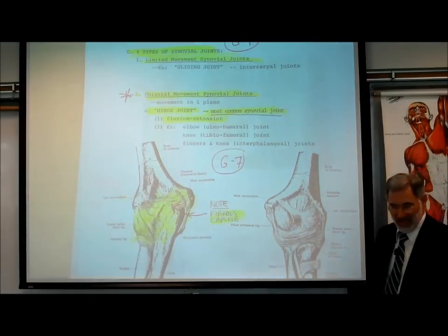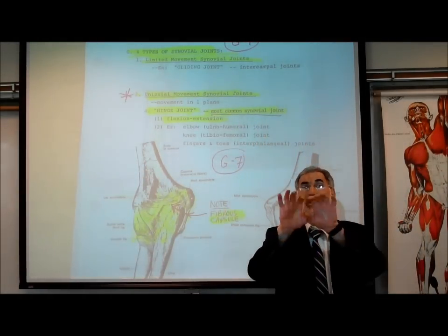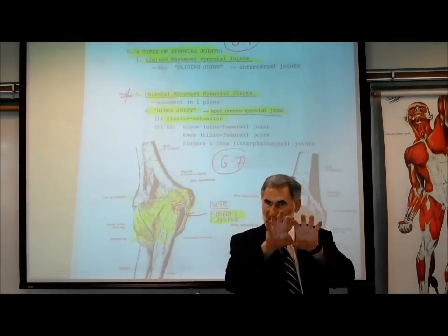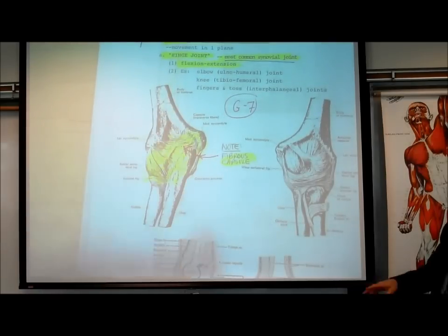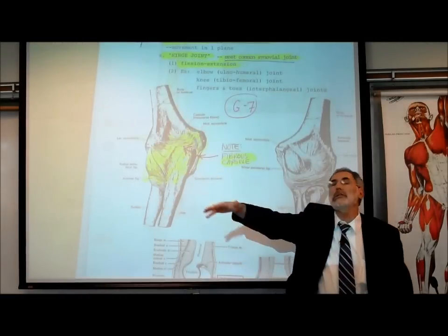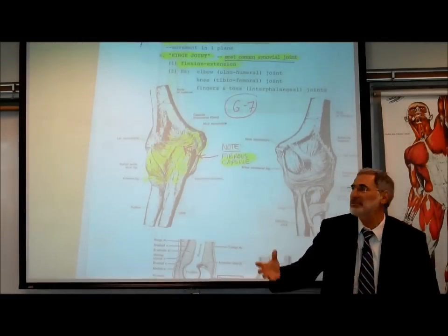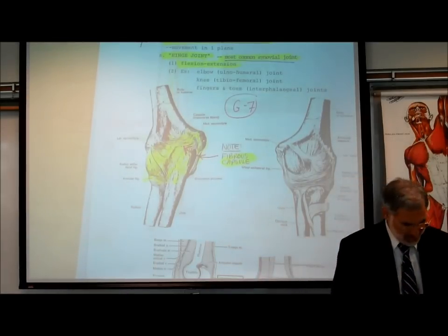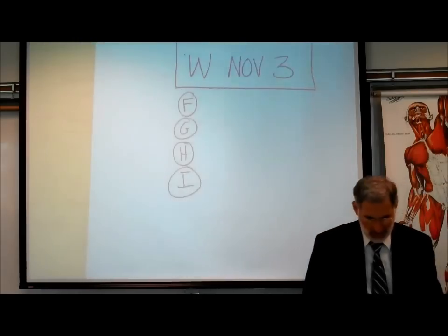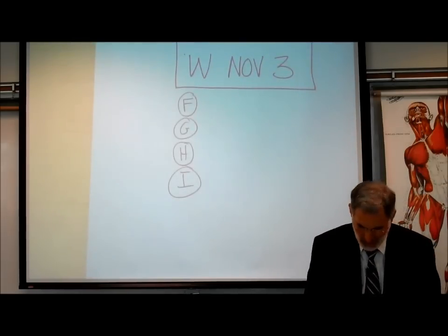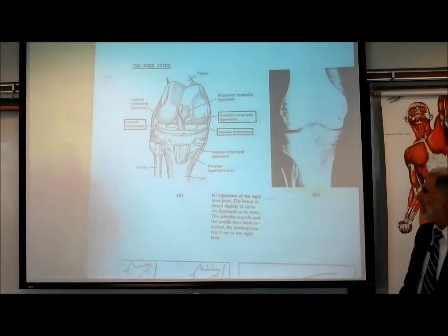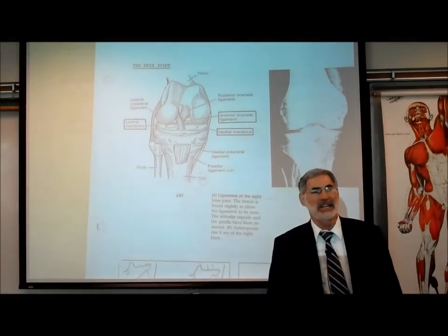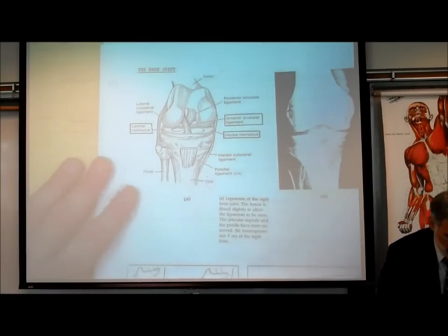Hinge joints include not only the elbow and the knee, but also the joints between your phalanges — both fingers and toes — and they allow flexion and extension. This picture shows the elbow joint area, reminding us that a whole bunch of ligaments encircle the bones and hold them together; it's called a fibrous capsule. On page G9, there is one hinge joint I want to spend a few minutes on: the knee joint, which is a very important joint to know about.